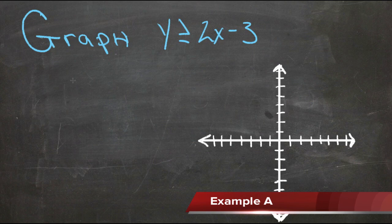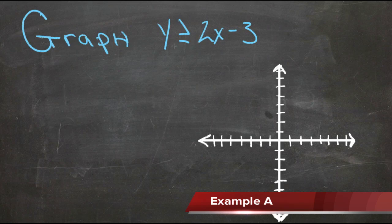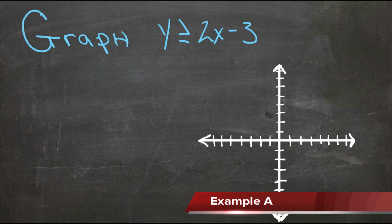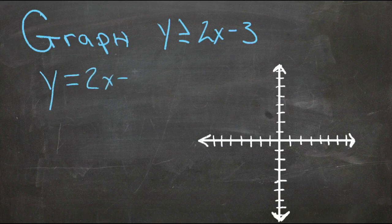Here we have a linear inequality with two variables: y is greater than or equal to 2x minus 3. This may look a little bit confusing, but it's actually almost exactly the same process as we used before when graphing equalities, which are in a straight line. In this case, y equals 2x minus 3. In fact, we're going to start there. So let's take a look at this as if it were the equation y equals 2x minus 3.